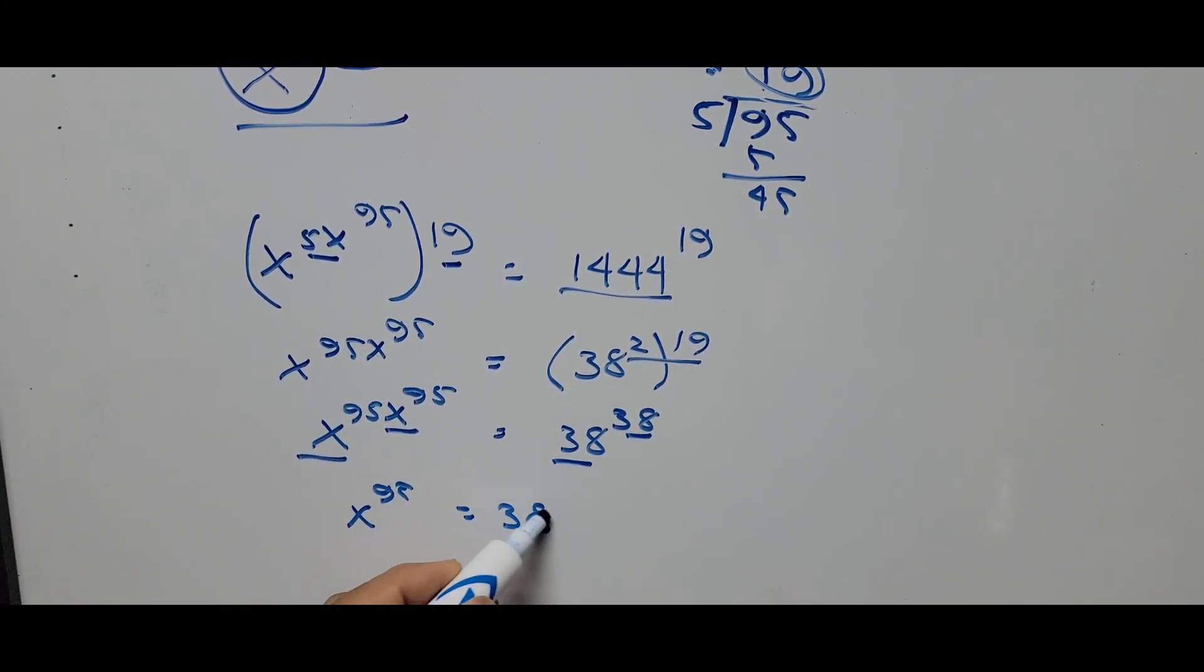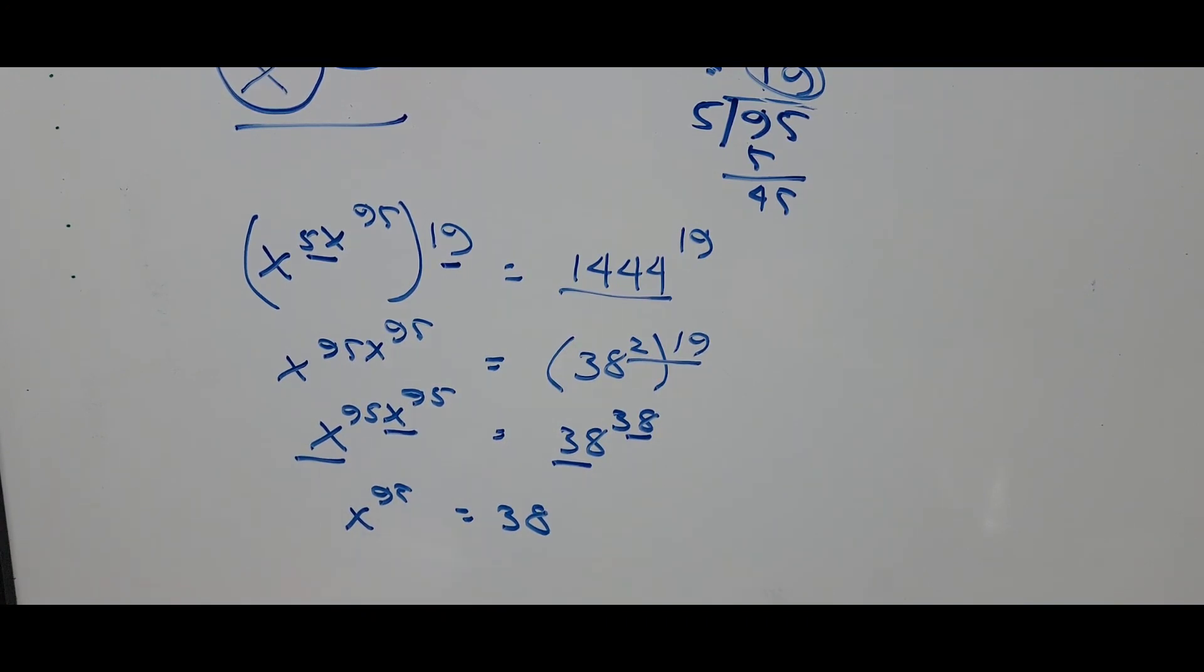95 is equal to 38. And in here, the value of x is equal to 38 raised to 1 over 95. So that's the final answer.